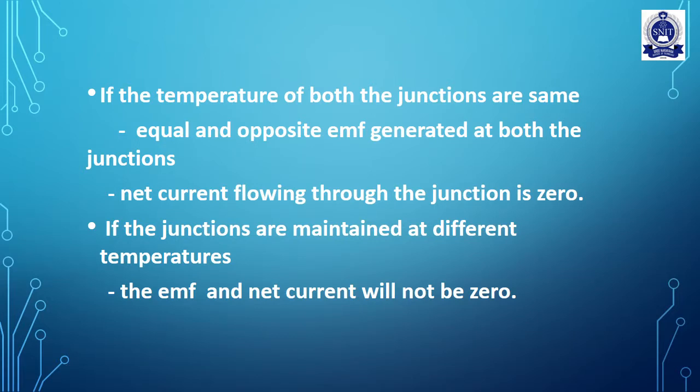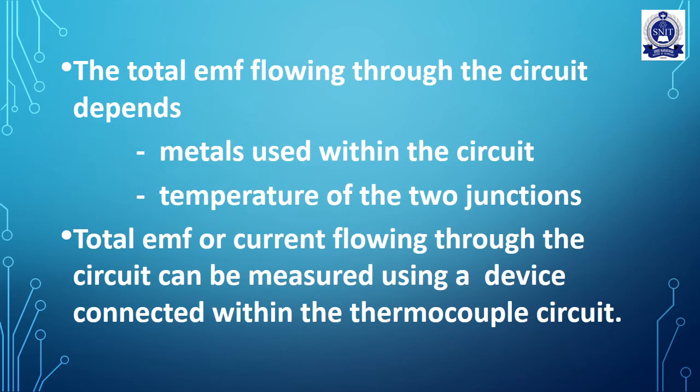Junctions P and Q are at temperatures T1 and T2. If the two temperatures are the same, they cancel each other and net current flowing is zero. If the junctions are at different temperatures, there will be an EMF and net current will not be zero. The total EMF depends on the metals used and the temperature difference.